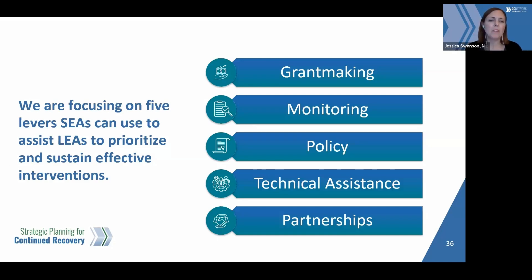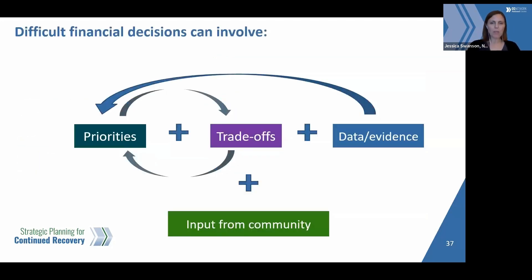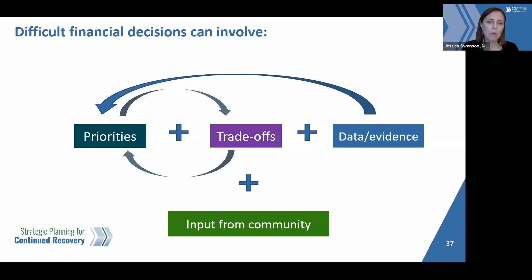Jessica Swanson here with National Center partner at Edunomics Lab at Georgetown. As we think about difficult financial decisions, we start with data and evidence, and then we use those to help us shape and develop priorities. Then we can consider trade-offs and weigh this with input from our community.